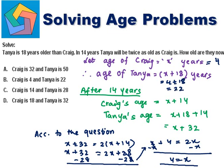So the answer is: Kreech is 4 years old and Tanya is 22 years old.